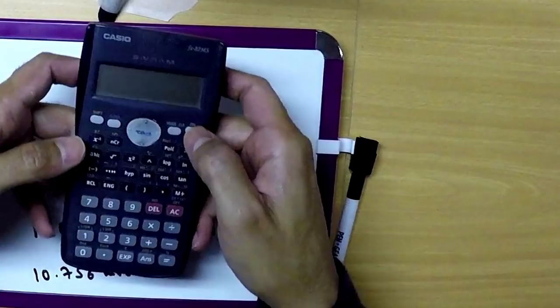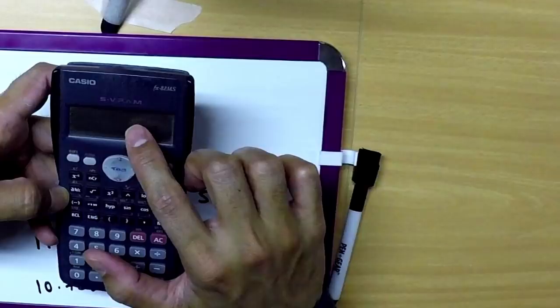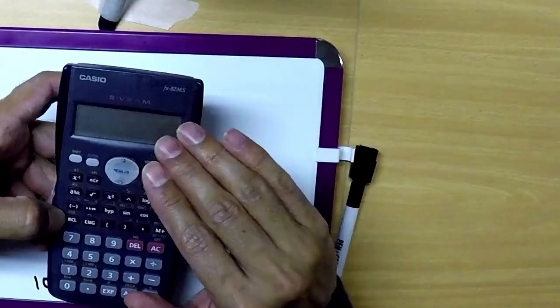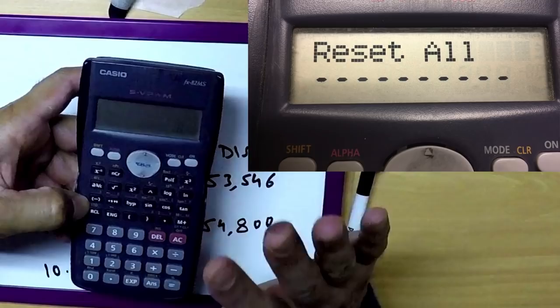When you switch on your calculator, it should look something like this. It should just have a D on it and nothing else in the memory. In case there is, first step is to press shift, clear. When you press, it will show something like this. You press 3 reset all, then reset all again. This way the calculator is reset.